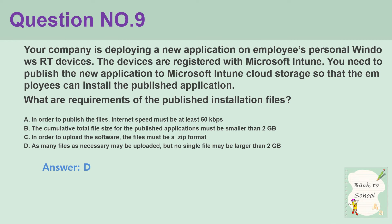Question number 9. Your company is deploying a new application on employees' personal Windows RT devices. The devices are registered with Microsoft Intune. You need to publish the new application to Microsoft Intune Cloud Storage so that the employees can install the published application. What are the requirements of the published installation files? A. Internet speed must be at least 50 kbps. B. The cumulative total file size for the published applications must be smaller than 2 GB. C. In order to upload the software, the files must be in .zip format. D. As many files as necessary may be uploaded, but no single file may be larger than 2 GB. Answer: D.